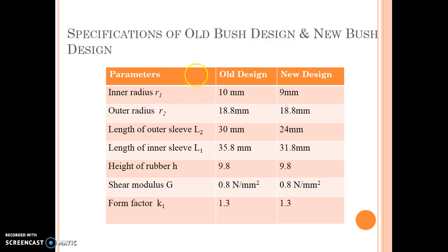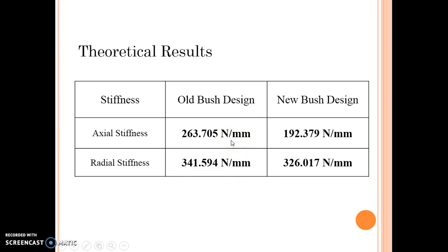These are the specifications of the bushes studied. This is the old design with its corresponding values, and this is the modified design. The inner radius was reduced by 1 mm. The lengths of the outer sleeve and inner sleeve were changed. These values were reduced according to customer requirements. K1 is a form factor which is kept constant. After doing the theoretical study using the stiffness values, the stiffness of the old bush versus the new bush can be compared. The stiffness was reduced from 263 to 192, and from 341 to 326. As stated earlier, the high stiffness was causing forces to be directly transmitted to the chassis.